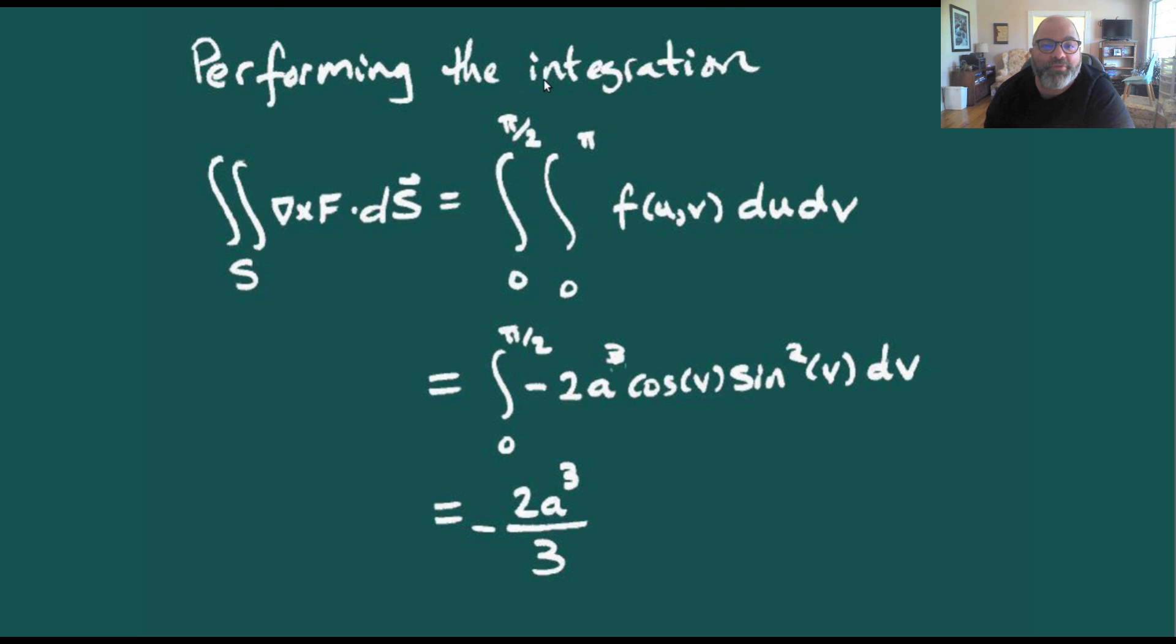Performing the integration ∫∫_S curl(F)·dS, we integrate from 0 to π for u and 0 to π/2 for v. Remember, v is the angle from the positive z-axis, so v goes from 0 to π/2 for the upper hemisphere. We only want where y is positive, which corresponds to quadrants 1 and 2, so u goes from 0 to π.